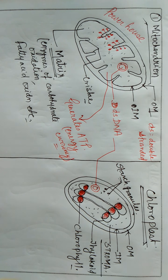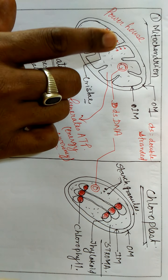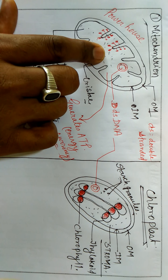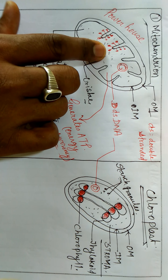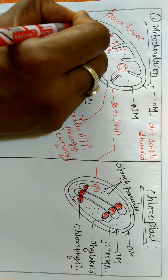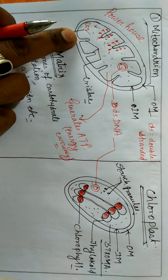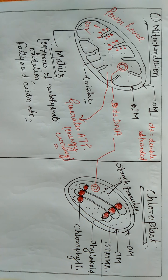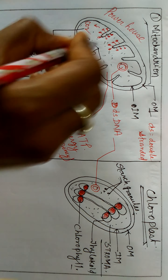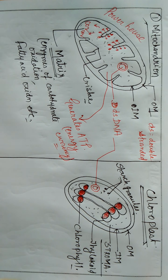This ATP is generated by the complete oxidation of glucose inside the matrix of the mitochondria. Due to that oxidation, carbon dioxide is released. This CO2 is finally exhaled out from our lungs, so excess CO2 is produced by the mitochondria.